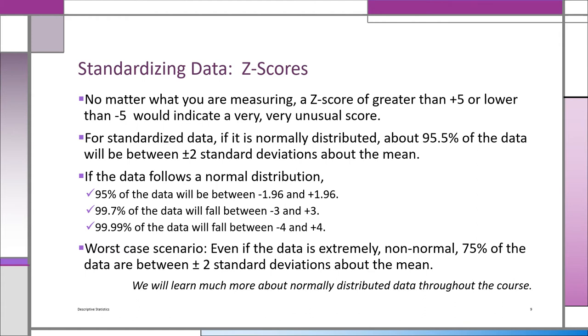Now let's say data is not normally distributed. In fact it's badly skewed. Remember, normal distribution means symmetric. We still know something called Chebyshev's theorem: 75% of your data should be between plus two and minus two standard deviations about the mean. So worst case scenario, 75% of your data should be within two standard deviations. If the data is normally distributed, then 95.5% will be between plus two and minus two. We'll learn more about normally distributed data throughout the course.